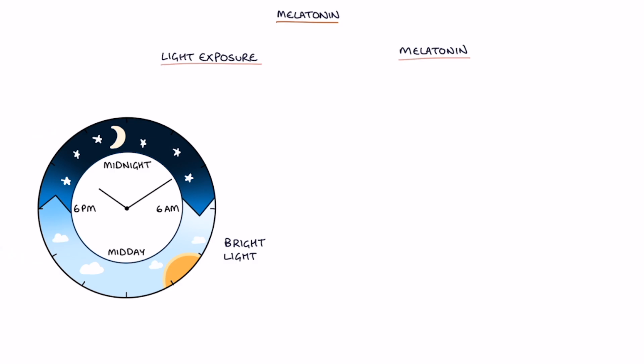There's a relationship between light exposure and melatonin. Exposure to bright light, for example in the morning, reduces melatonin, and the levels rise in dark environments, for example at night time.